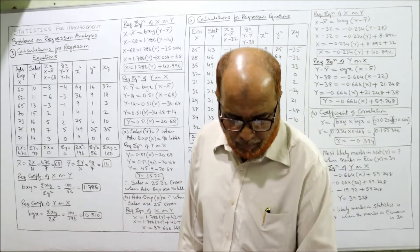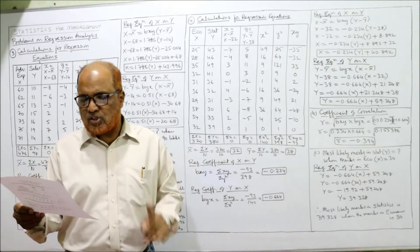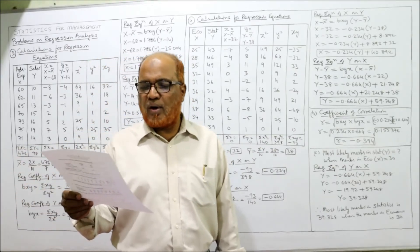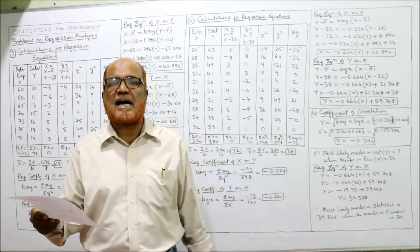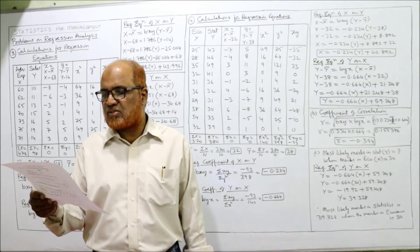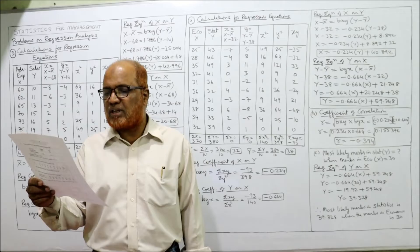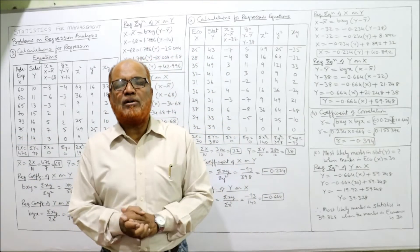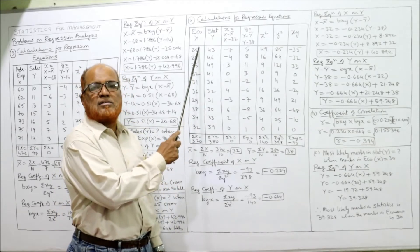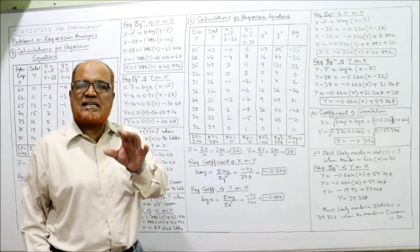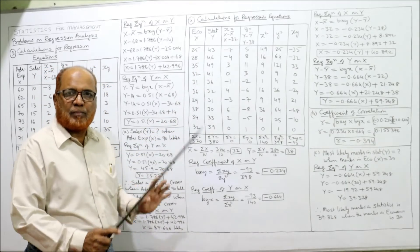Now problem 4. From the data given, find: (1) two regression equations, (2) the coefficient of correlation between marks in economics and marks in statistics, and (3) the most likely marks in statistics when marks in economics are 30. The two variables are marks in economics (X) and marks in statistics (Y). Data given: marks in economics are 25, 28, 35, and so on; marks in statistics are 43, 46, 49, and so on.